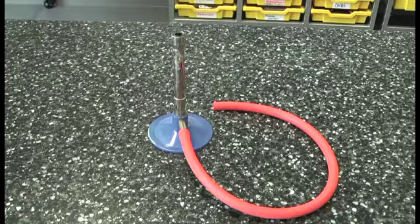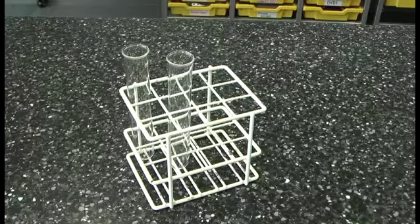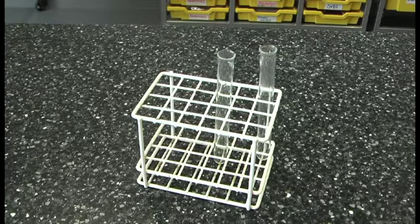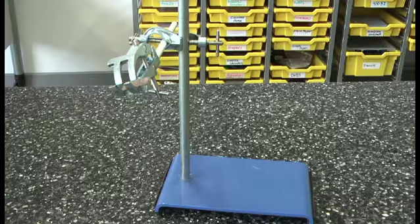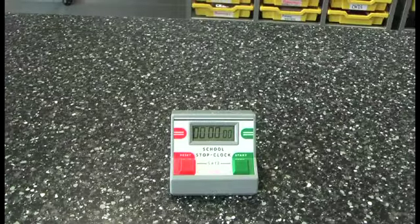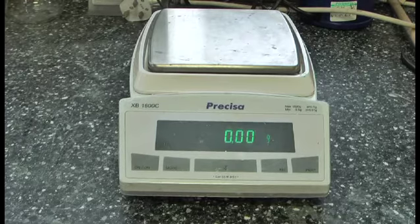A delivery tube, a Bunsen burner, boiling tubes and a boiling tube holder, some test tubes in a test tube holder, a torch stand, boss and clamp, a spatula, a stopwatch and finally a mass balance.